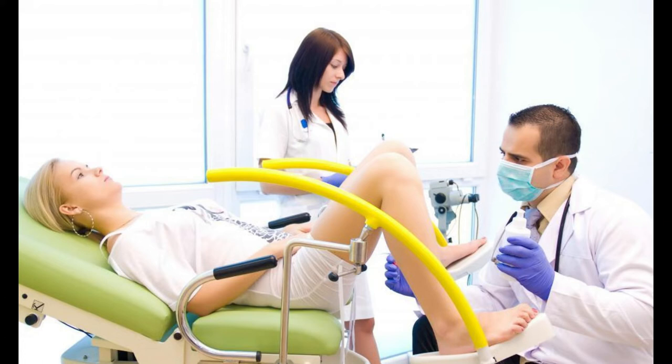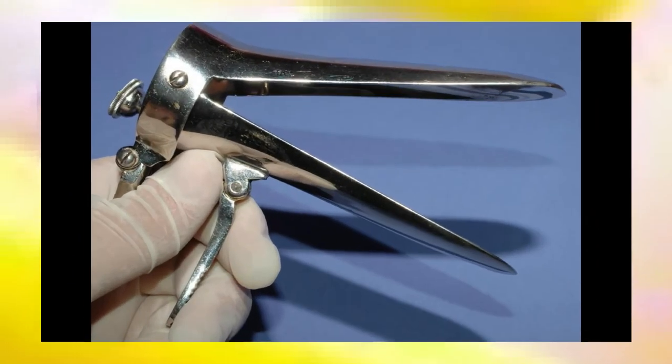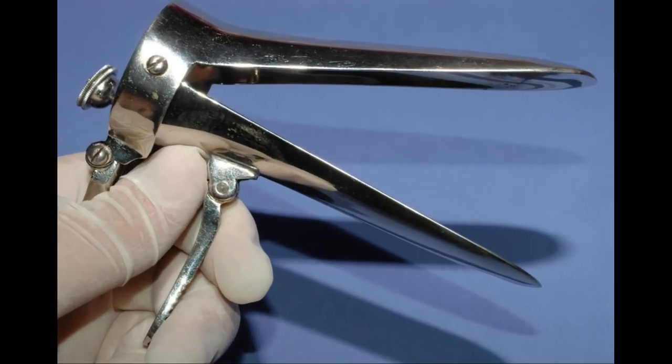In order to properly inspect the vaginal canal and cervix, the walls of the canal must be parted enough to allow a clear visual assessment. The graves speculum accomplishes this by using two rounded blades to lift the tissue away from the center of the canal.